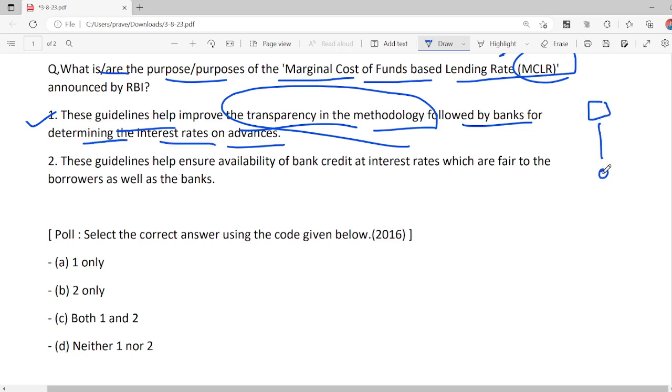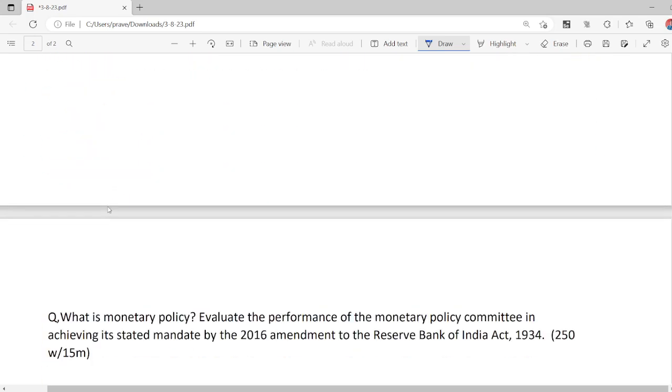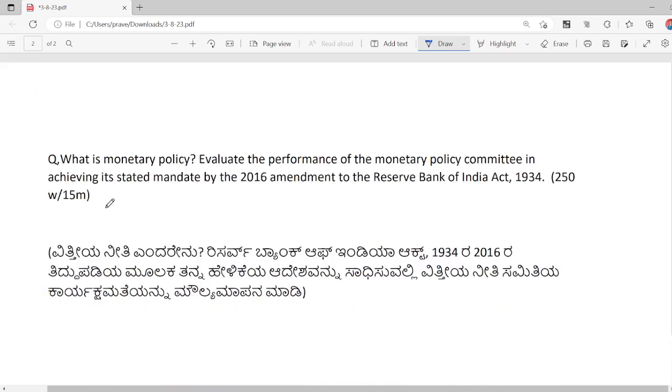These guidelines help ensure availability of bank credit at interest rates which are fair to the borrowers. To decide MCLR, both are correct, so the answer is C, both one and two.